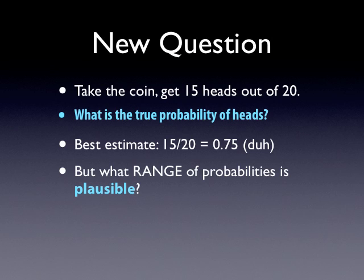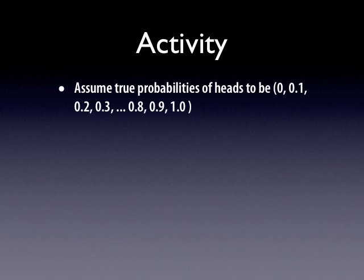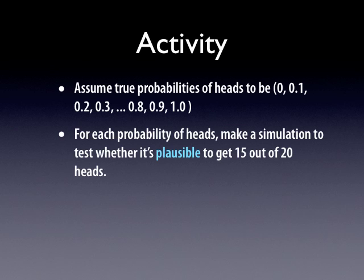There's that word 'plausible' again. So here's how we approach it — we're going to do an activity. We're going to look at all the possible true probabilities and find out for which of them this result of 15 out of 20 is plausible. Of course you can't really do all the probabilities — that's all the numbers between 0 and 1 — so we're just going to take 0, 0.1, 0.2, 0.3, and so on up to 1.0. That means you're going to do 11 total simulations. And for each one of these probabilities, you're going to make a simulation to test whether it's plausible to get 15 out of 20 heads.